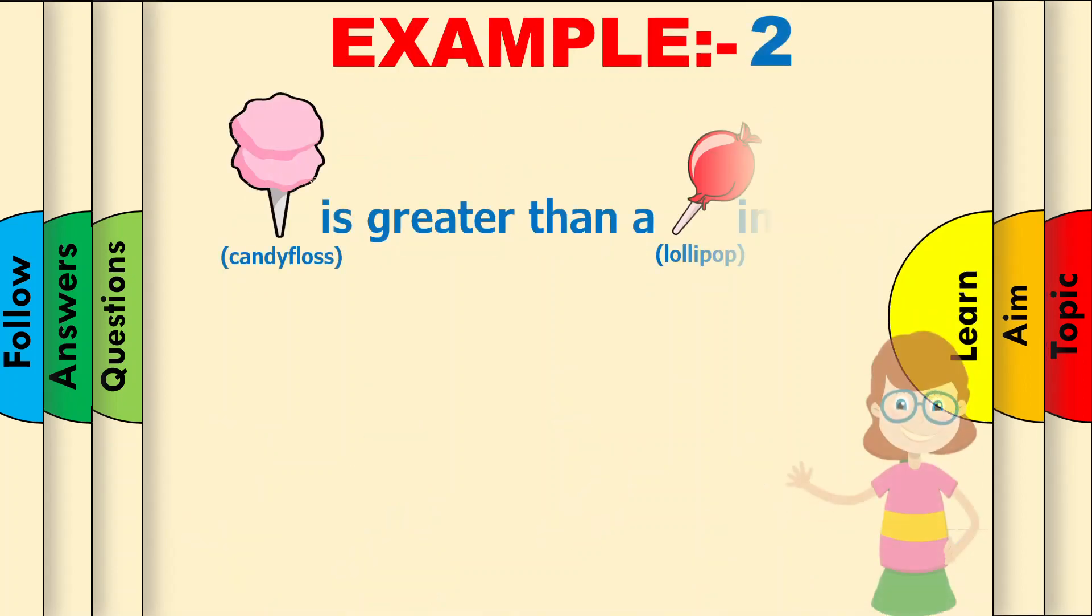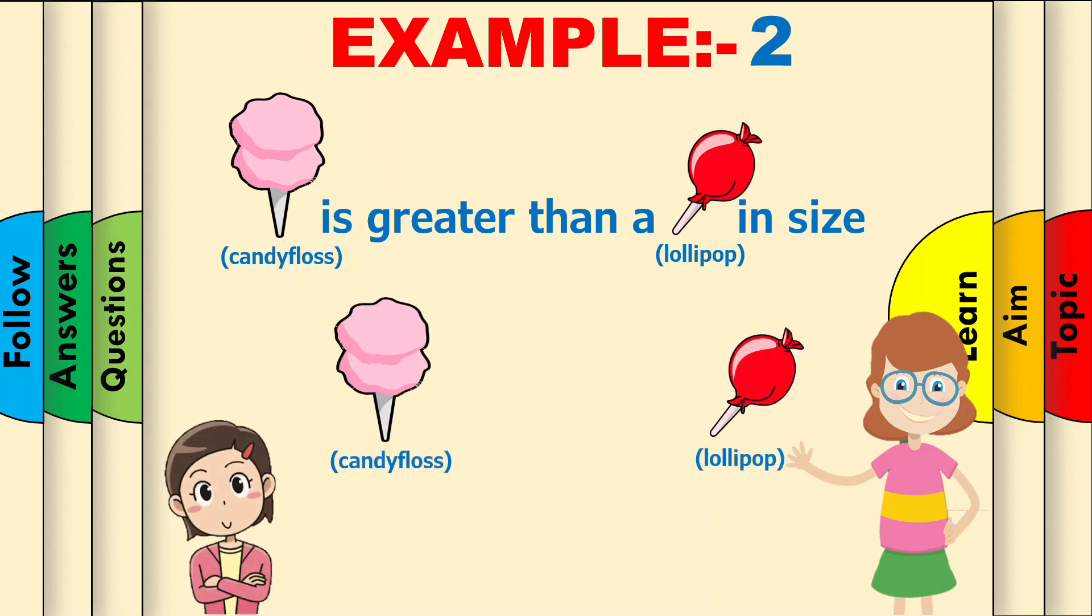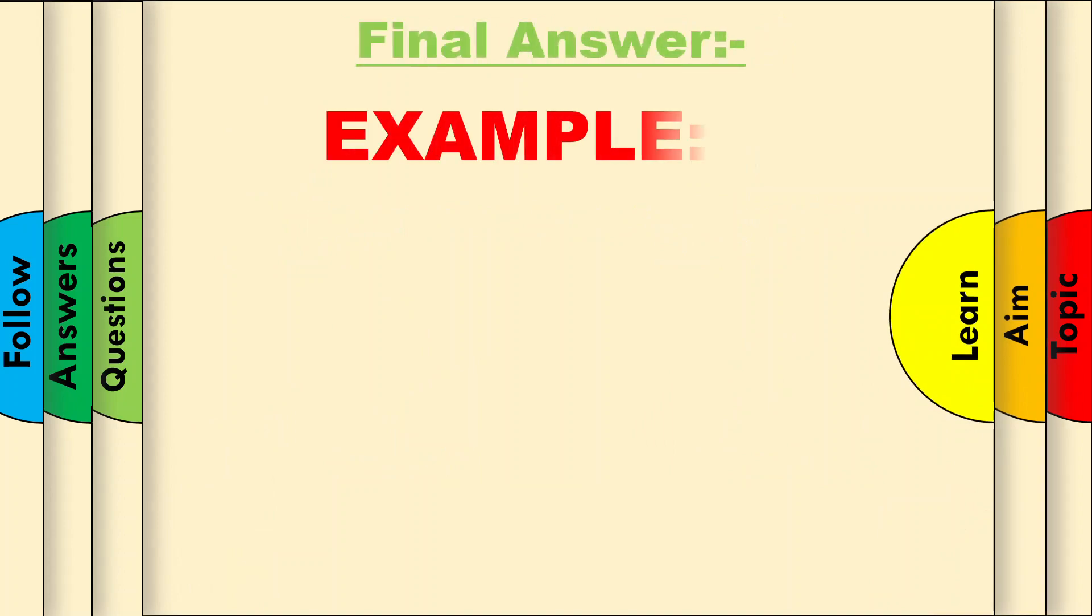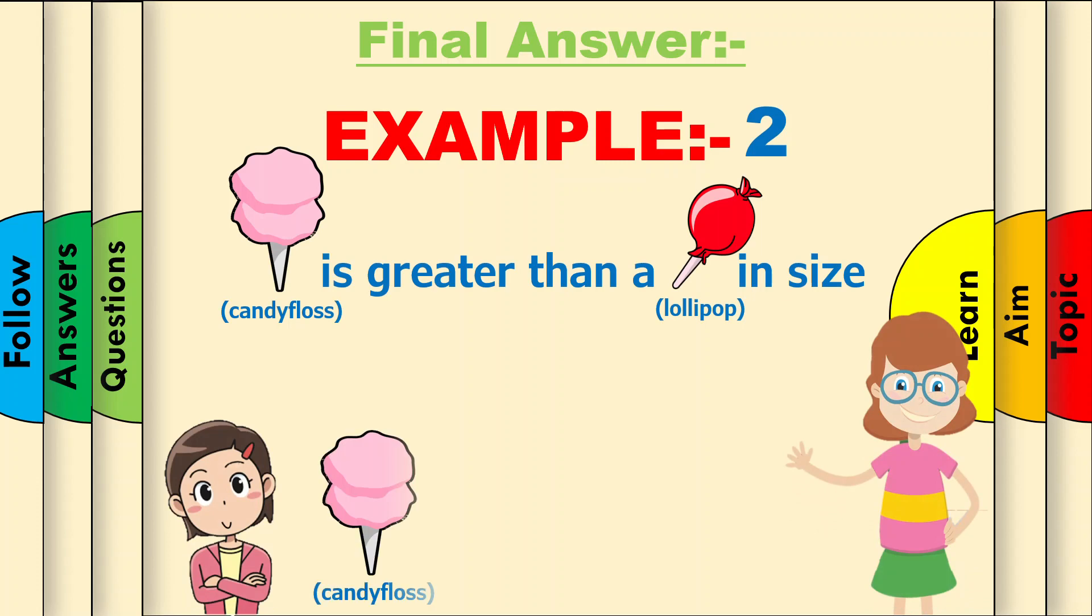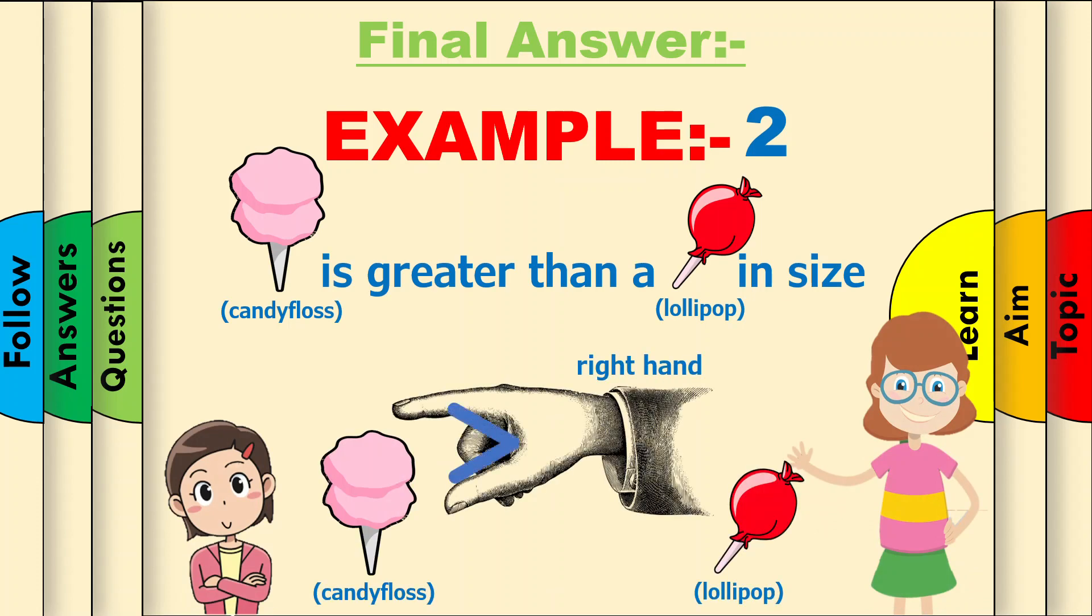Example 2. The teacher says a candy floss is greater than a lollipop in size. Which way round is the symbol? I know! The final answer for example 2. Candy floss is greater than a lollipop in size. Use method 2. Our right hand. Well done!